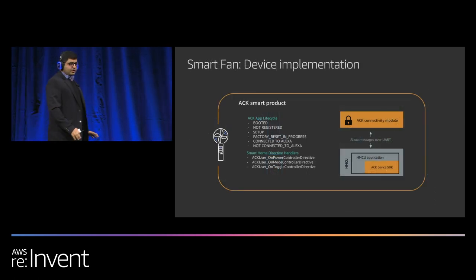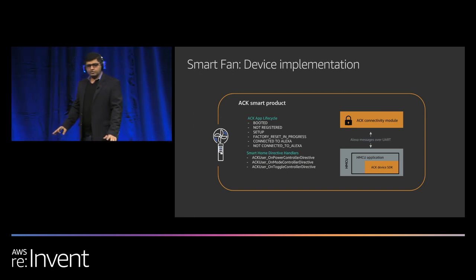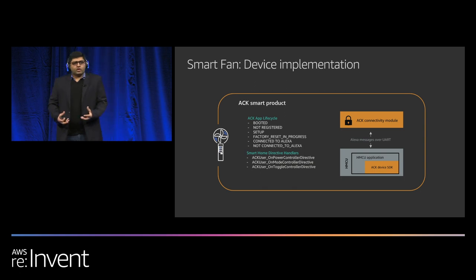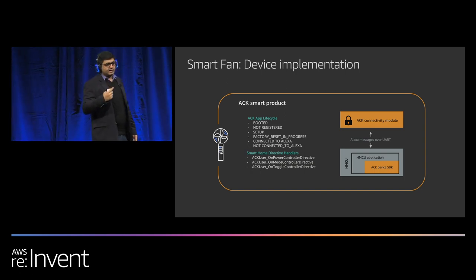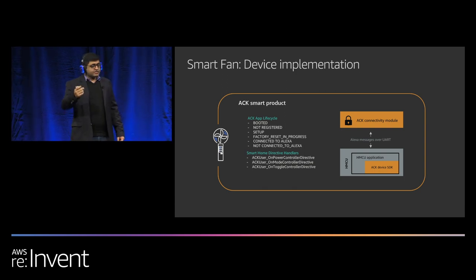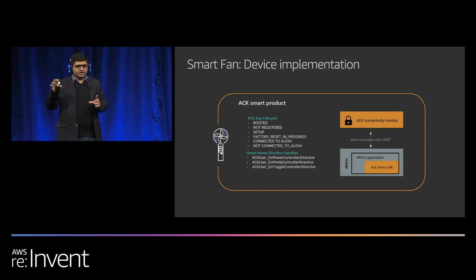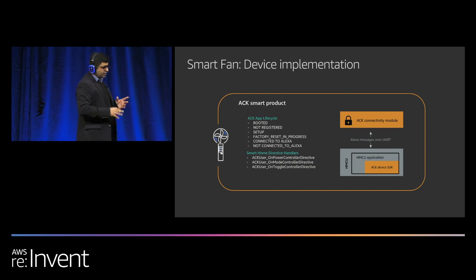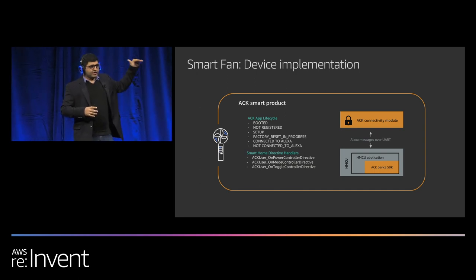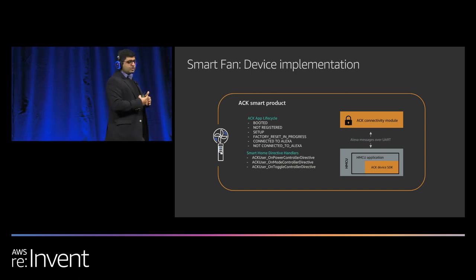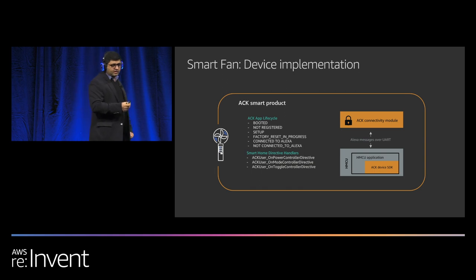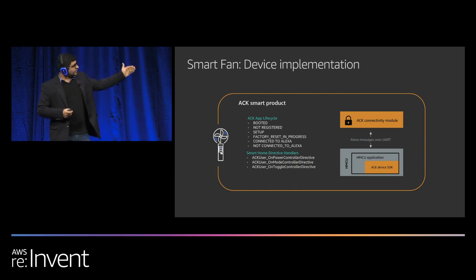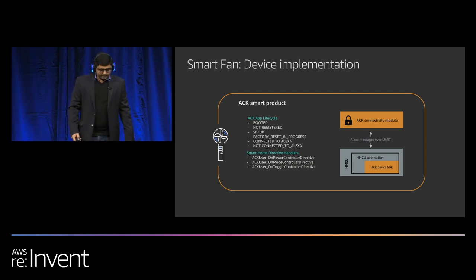Up until now you have not written a single line of code as a manufacturer. The next step is what you do on the product side. First, you have the connectivity module, then the serial interface. You have to handle two tasks: one is handling connectivity state — when you get connected or disconnected, you tell the user by turning on a GPIO or a light, like red means not connected, green means connected. We call this the ACK app lifecycle. The second piece is handling control messages — someone says turn on this fan, and it comes to your smart home device controllers.